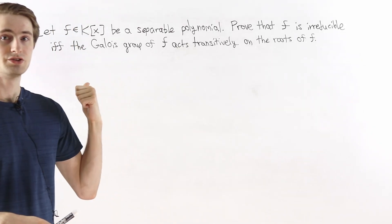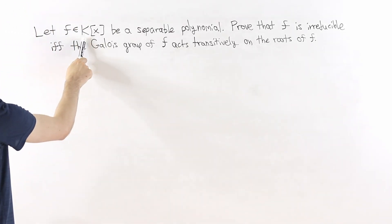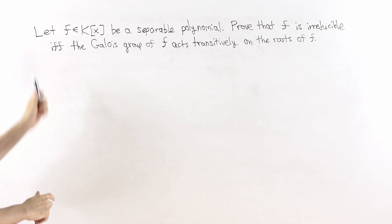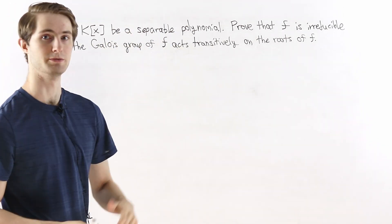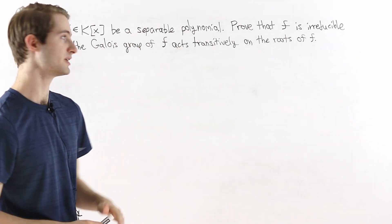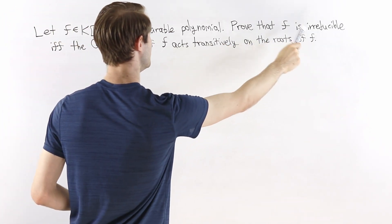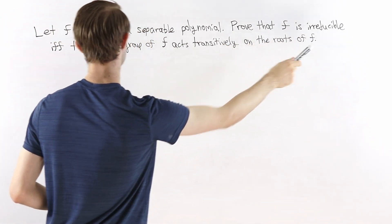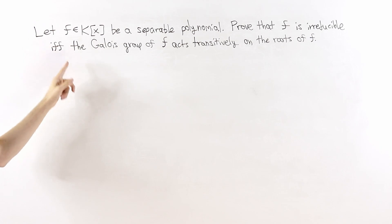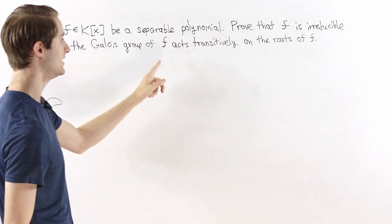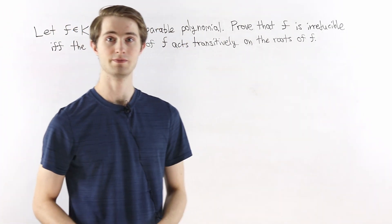We are going to prove the statement on the whiteboard. We'll consider a field k and let f in k[x] be a separable polynomial, meaning it has distinct roots in a splitting field. We want to prove that f is irreducible — meaning it can't be factored in k — if and only if the Galois group of f acts transitively on the roots of f.